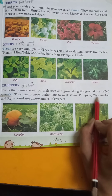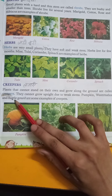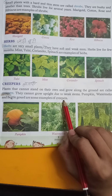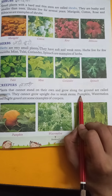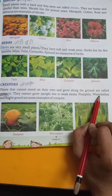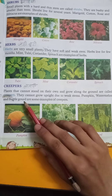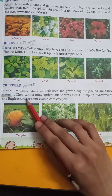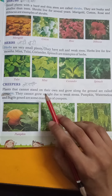Pumpkin, watermelon, and bottle gourd are some examples of creepers.